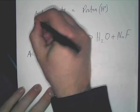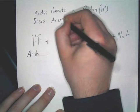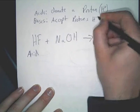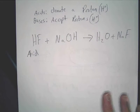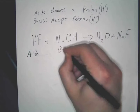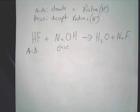So bases accept protons. And again, we mean H+. So obviously, what's NaOH then? It's a base. You know that because it's accepting the proton, and it's got OH in it. It's sodium hydroxide.